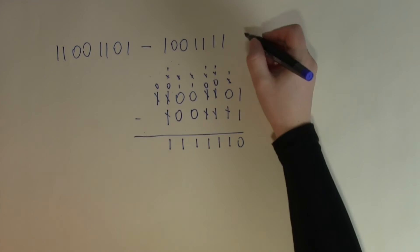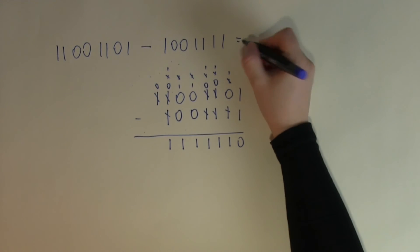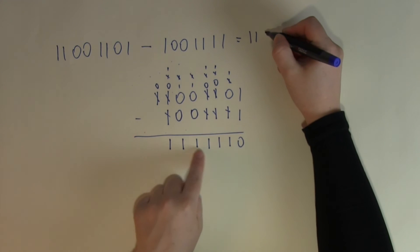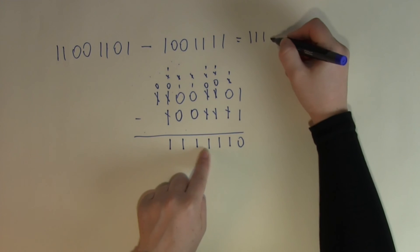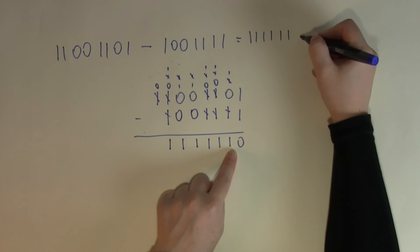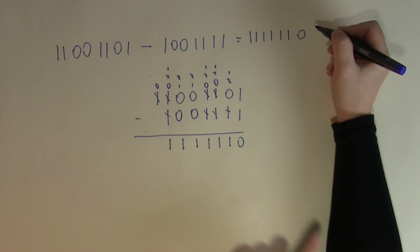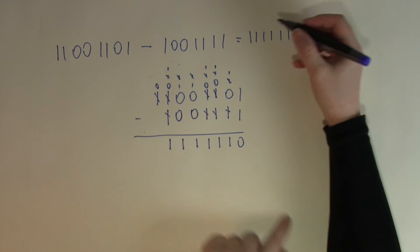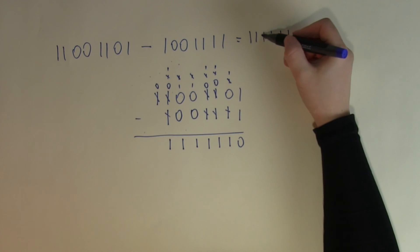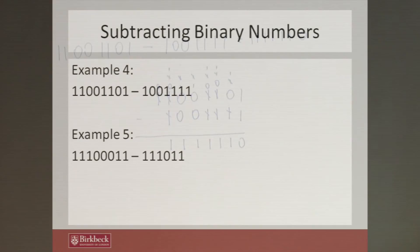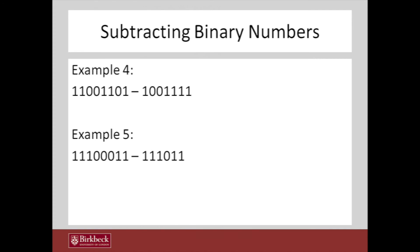So the answer to this subtraction is 1111110. Let's just double check — 1, 2, 3, 4, 5, 6 digits; 1, 2, 3, 4, 5, 6 — yes, copied correctly. And then let's look at the last example.